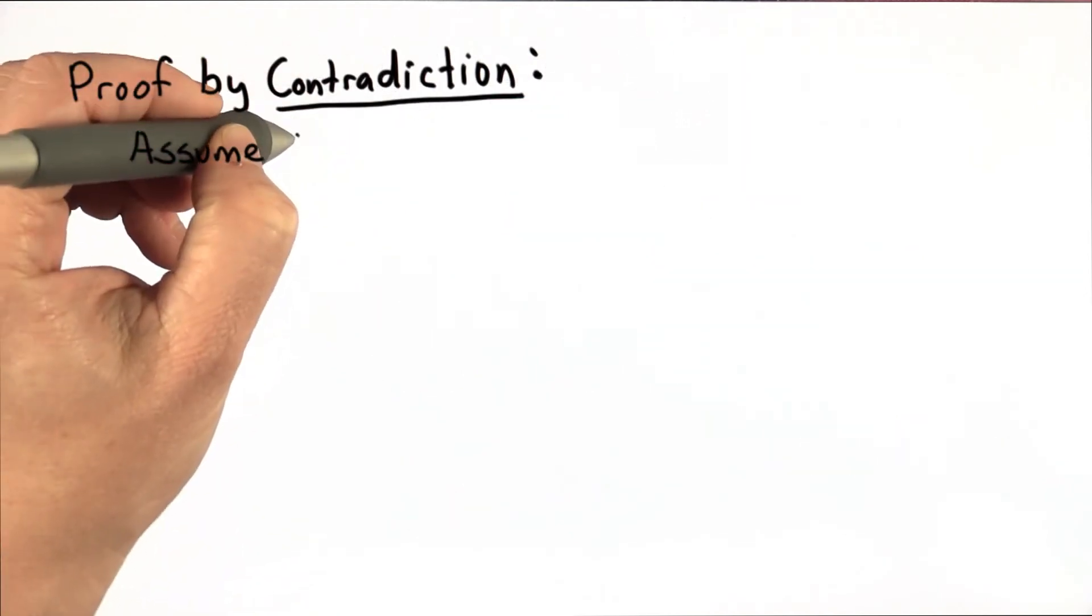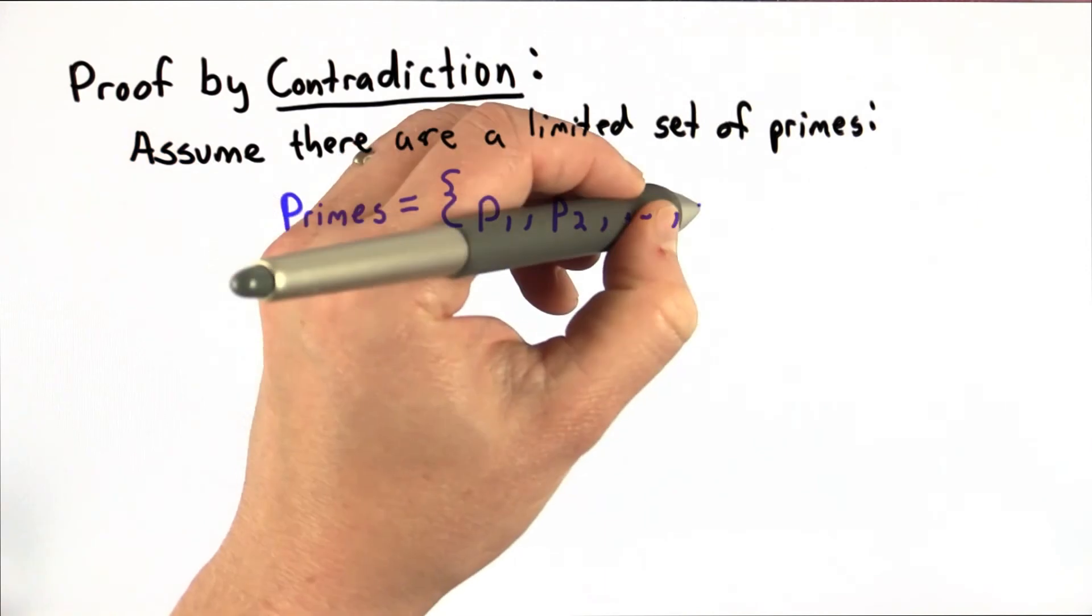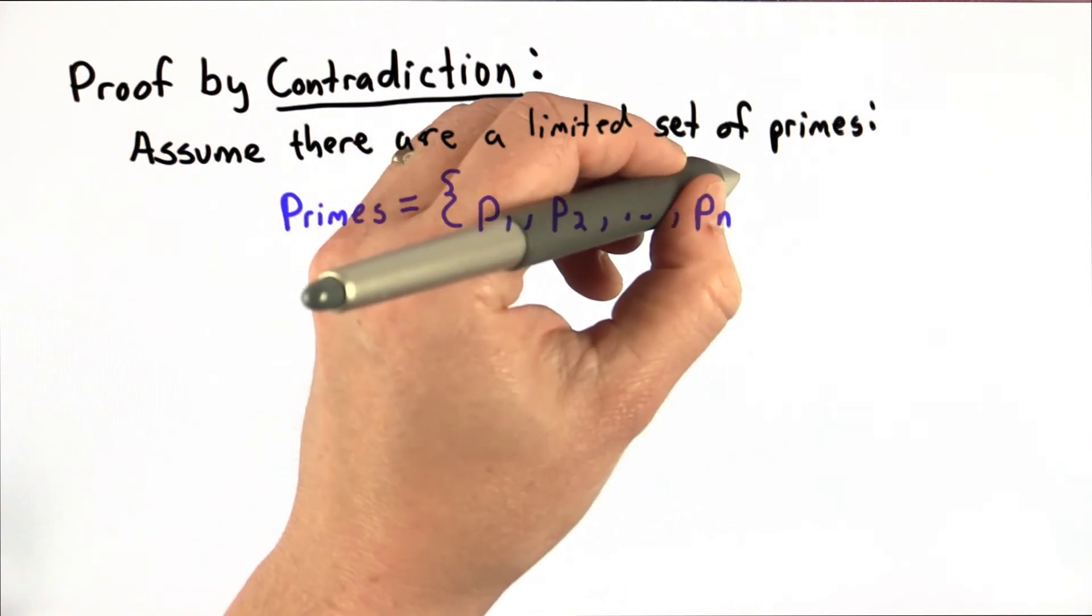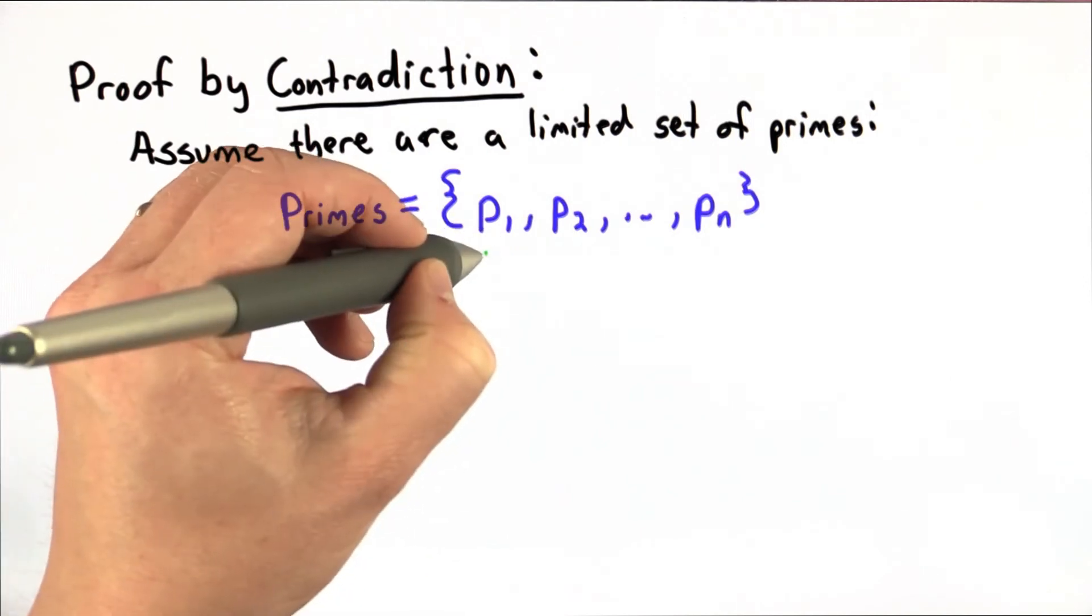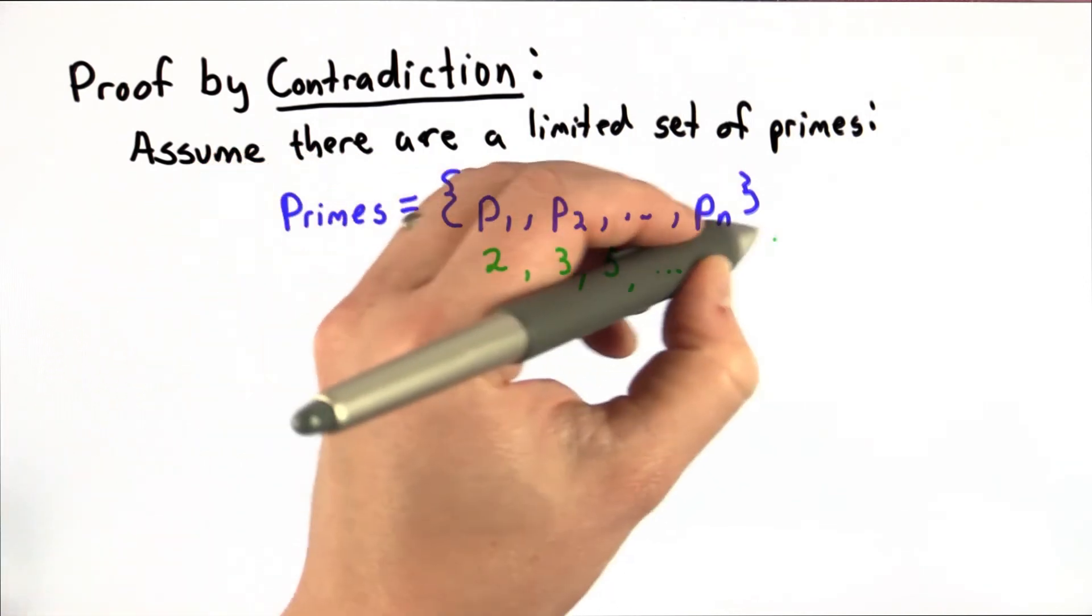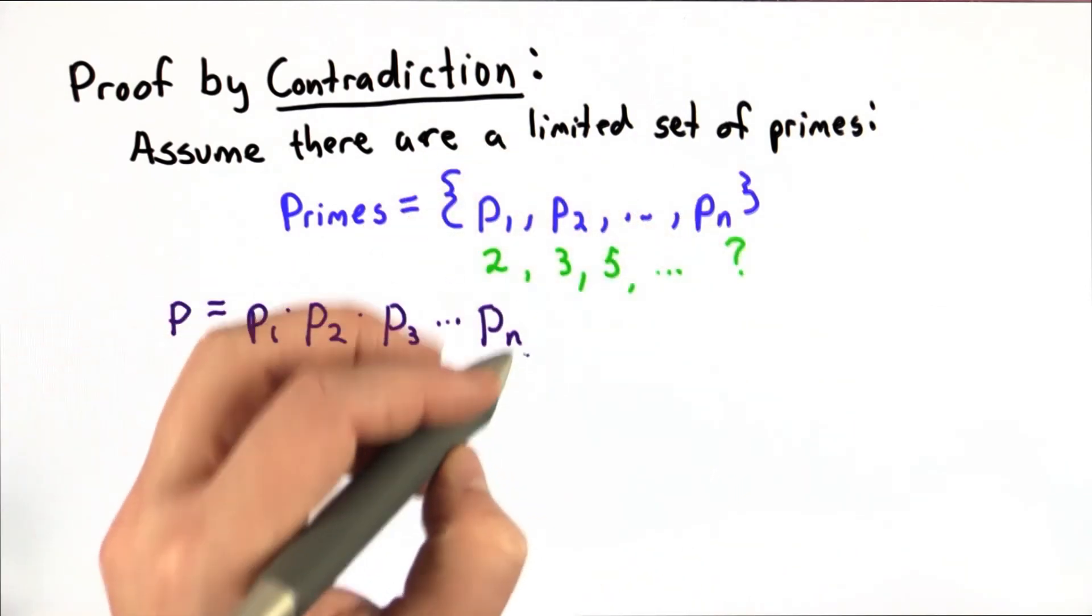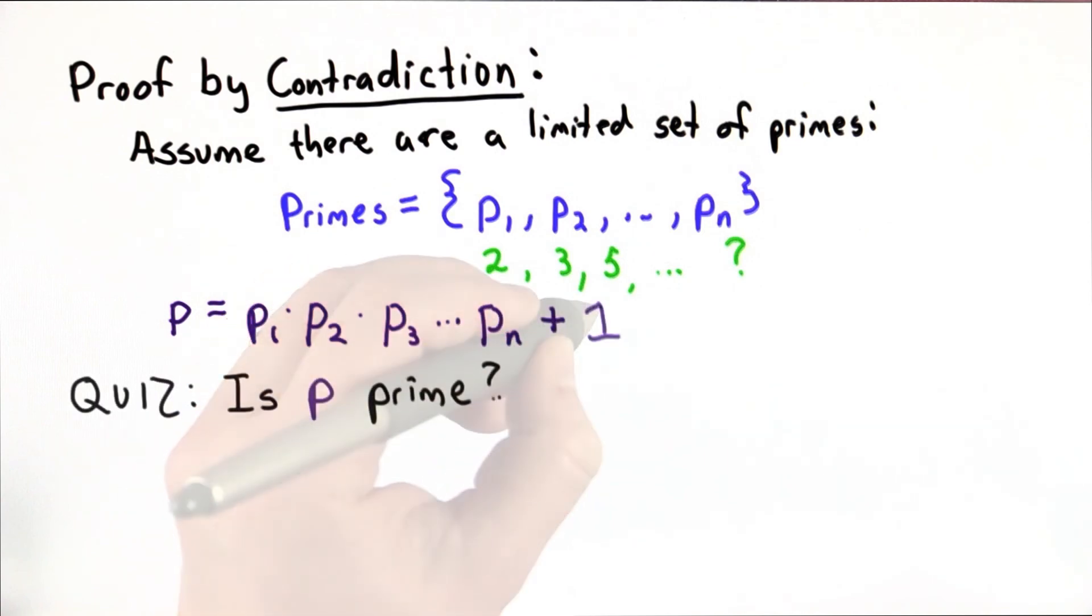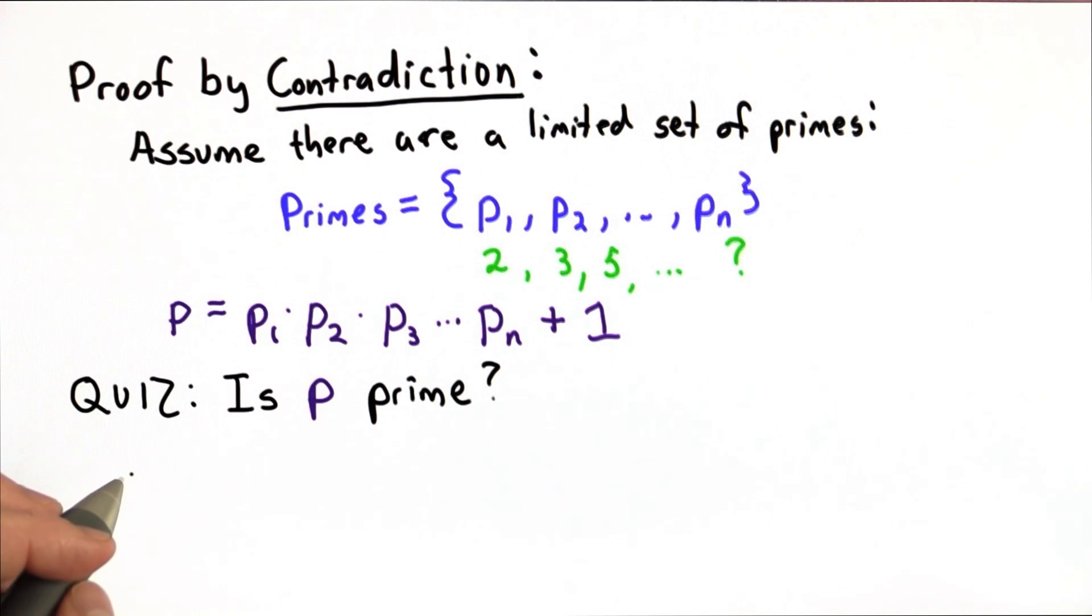We'll start by assuming there are a limited number of primes. That would mean we could define a set consisting of all of the prime numbers and know that it's a finite set with n primes in it. So the elements would be 2, 3, 5, and so forth, and there would be some highest prime which we don't know the value of. So then we'll compute the product of all those primes and add 1. So let's have a quiz. Is the value that we computed as p a prime number?